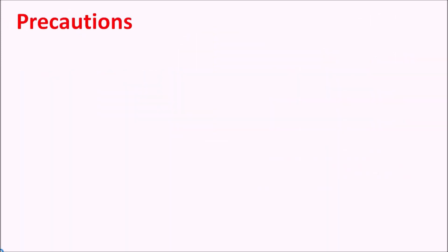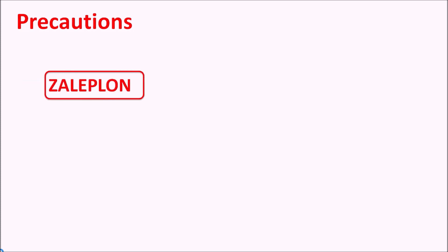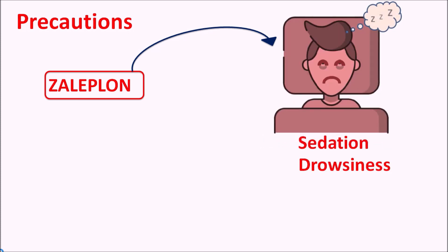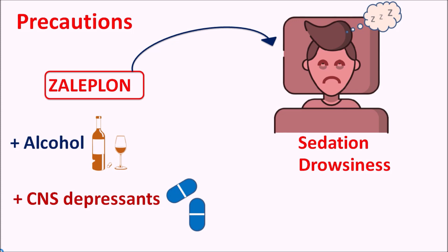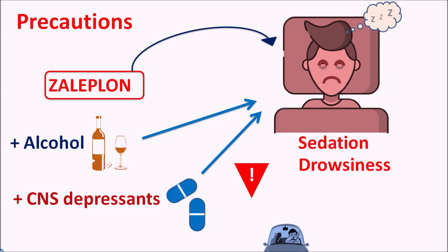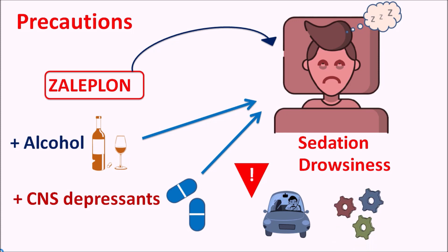Now let us see the precautions of Zaleplon. Just like other benzodiazepines, Zaleplon can produce sedation as well as drowsiness in patients. This is particularly more significant when Zaleplon is given along with alcohol or other CNS depressants such as opiates and barbiturates — such combinations can further increase sedation and drowsiness, so they should be carefully combined. Since this drug produces sedation, it can impair motor performance, reducing driving performance as well as the ability to work with machinery. Care should be taken in patients with such activities when Zaleplon is prescribed.